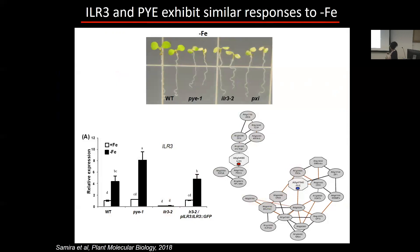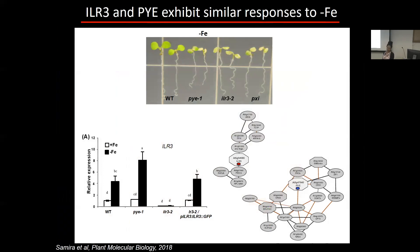When we look at the expression of ILR3 in a Popeye mutant background, it seems to be elevated, suggesting Popeye might be upstream of ILR3 and facilitating its repression. When we look at co-expression analysis, Popeye is co-regulated with many well-known iron homeostasis genes including FRO3, BHL101, NAS4, and ZIF1, but ILR3 is not co-regulated with those genes — suggesting ILR3 may play a role in something else as well.